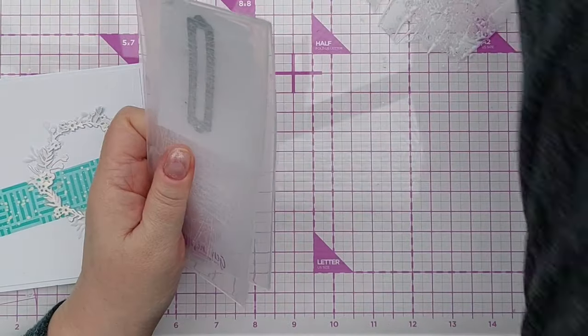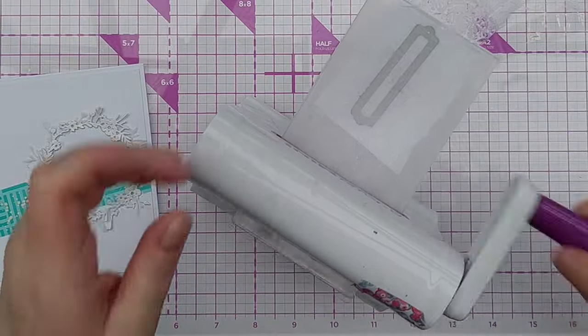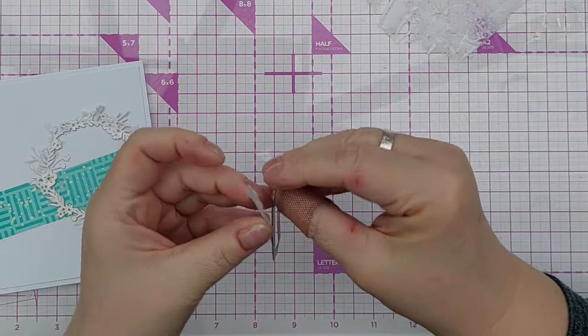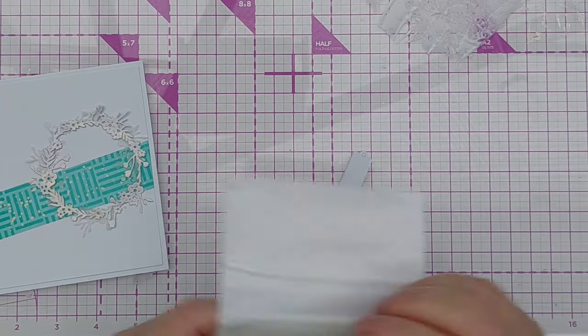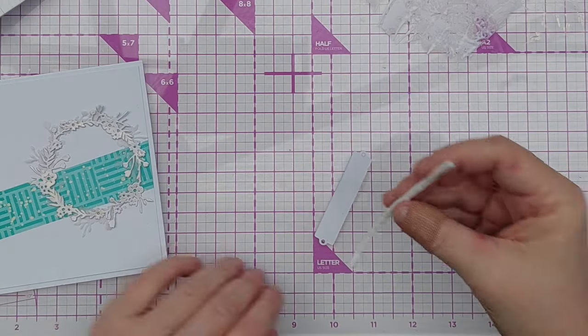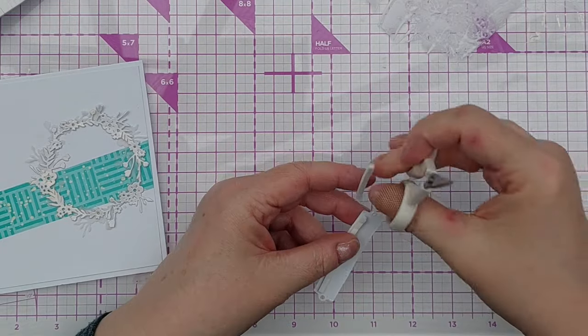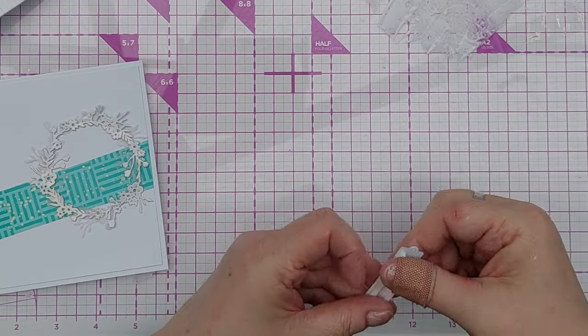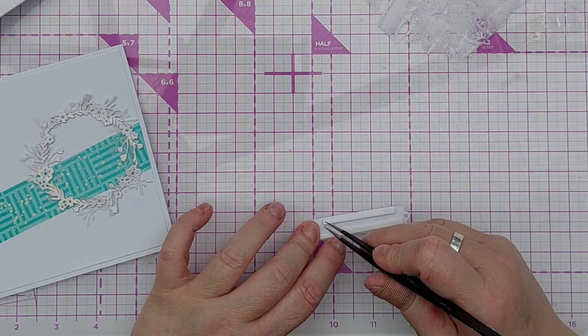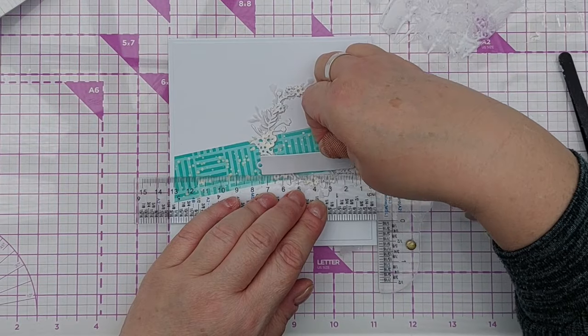On top of this wreath I wanted to create a little cluster to add to my focal point. So I cut a label out of smooth white cardstock. I added foam tape to the back to give it a little bit of dimension. And then I positioned this over the wreath, over the stripe, offset slightly just to make it pleasing to the eye.